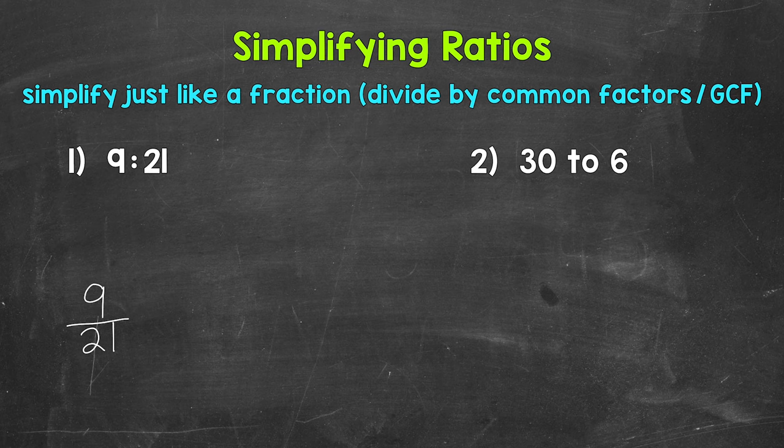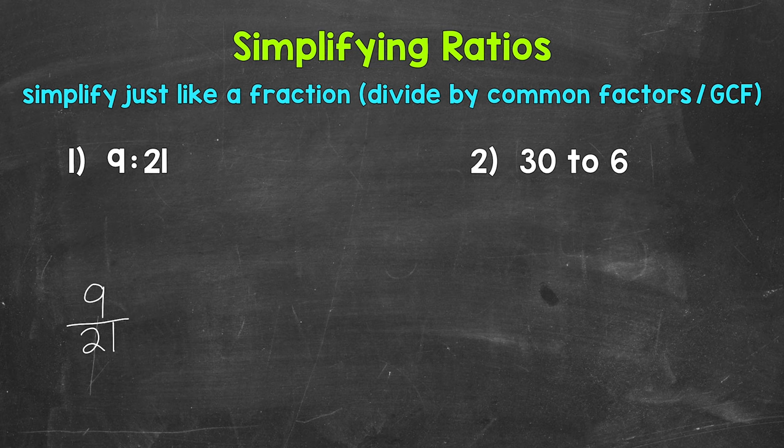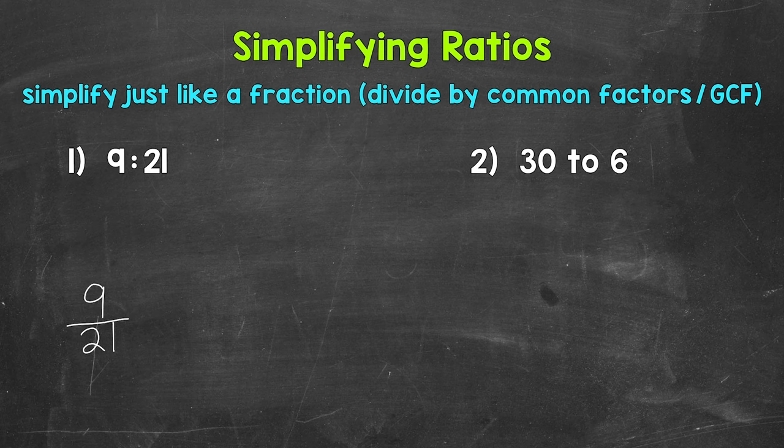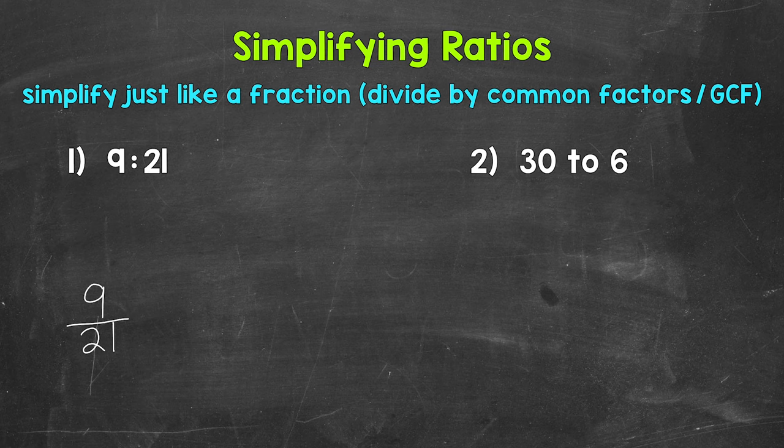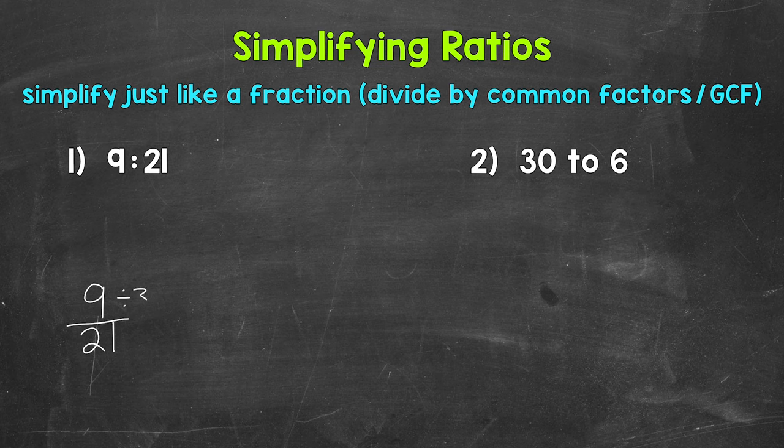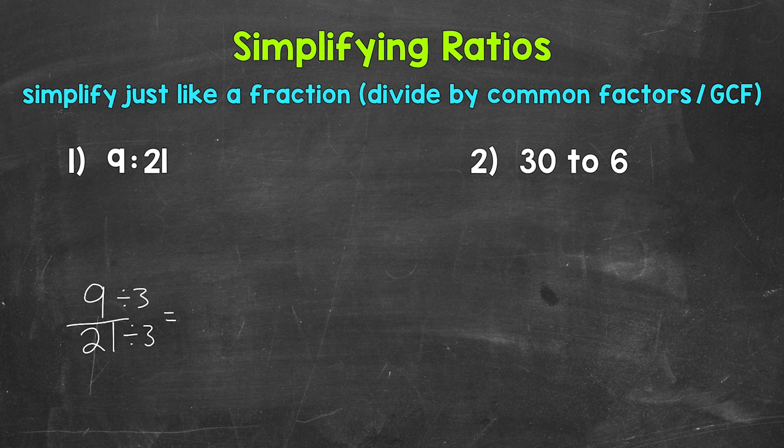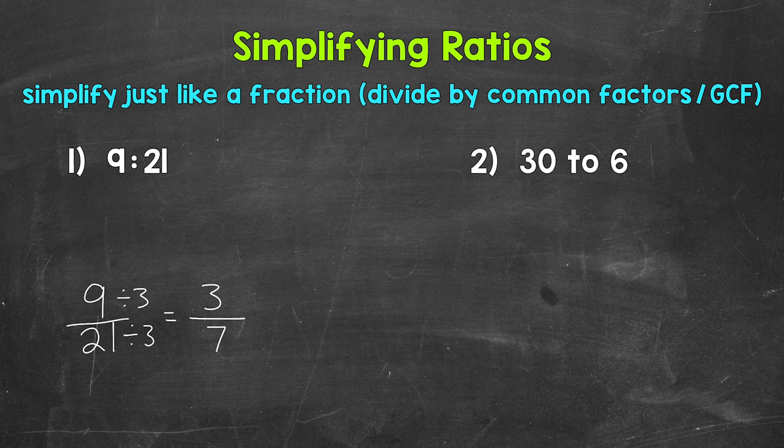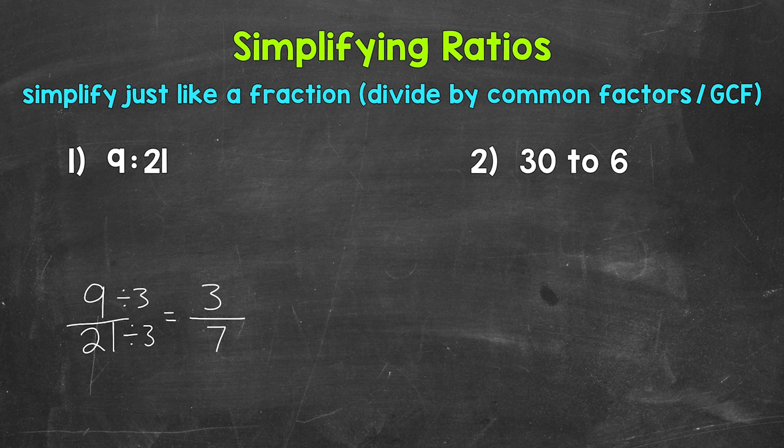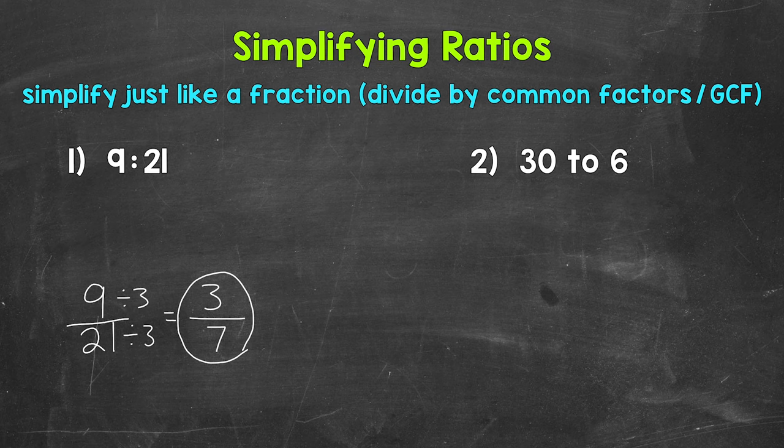So we have 9 to 21. Now we need to think of common factors between 9 and 21, numbers that we can divide both 9 and 21 by. Well, 3 is a common factor, and it happens to be the greatest common factor, the largest number in value, that we can divide both 9 and 21 by. So let's divide 9 by 3 and 21 by 3. 9 divided by 3 is 3, 21 divided by 3 is 7, so we get 3 to 7. The greatest common factor between 3 and 7 is 1, so we are in simplest form. 3 to 7 is our simplified ratio.